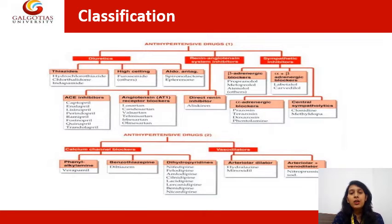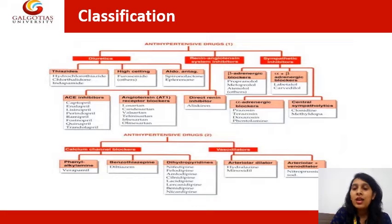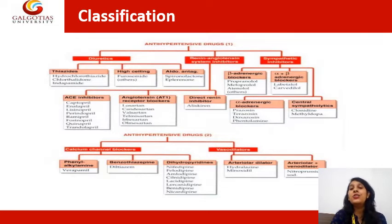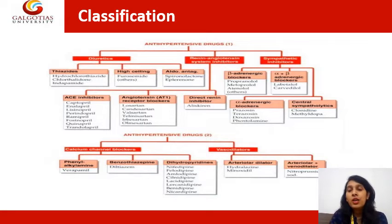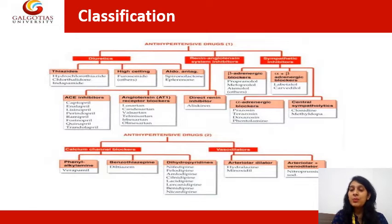The alpha-adrenergic blockers can be defined as alpha-1 blockers or alpha-2 blockers. The drugs are prazosin, terazosin, doxazosin, and phentolamine — these four drugs are alpha-adrenergic blockers. The fourth category of sympathetic inhibitors is central sympatholytics, which is quite different from the others.